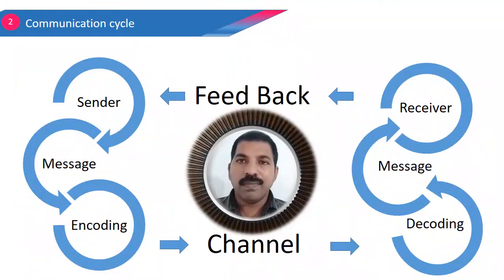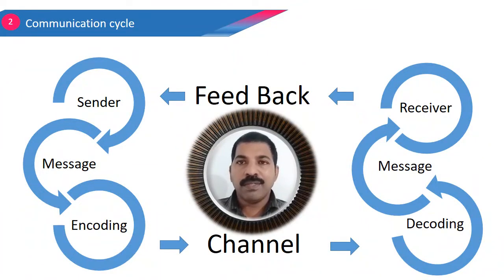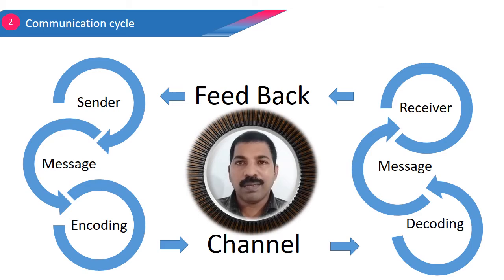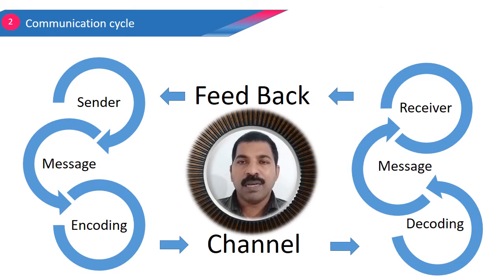In the communication cycle, the sender encodes the message and sends it through a channel. The receiver then decodes the message to understand it, and after interpreting, sends a response back to the sender in the form of feedback.